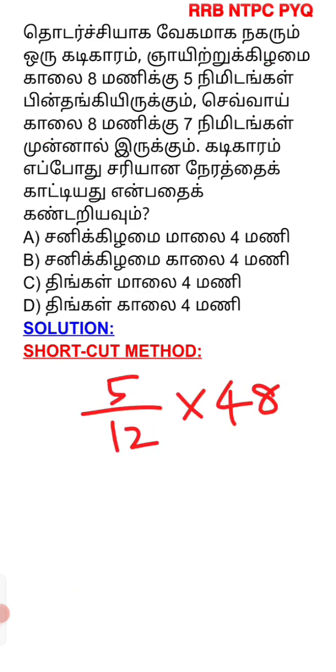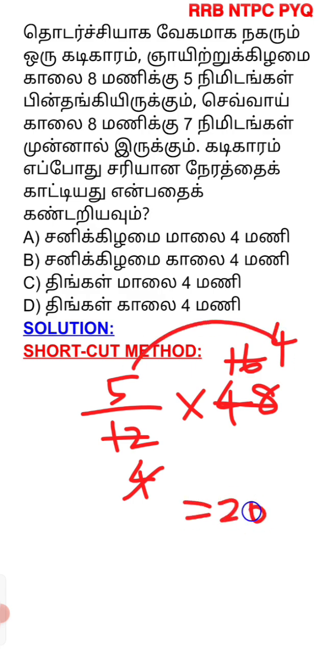Cancel: 12 into 48 gives 4. Using the tables: 4 times 3 is 12, then 6 times 3 is 18, and 4 times 4 is 16. So the result is 20 hours.